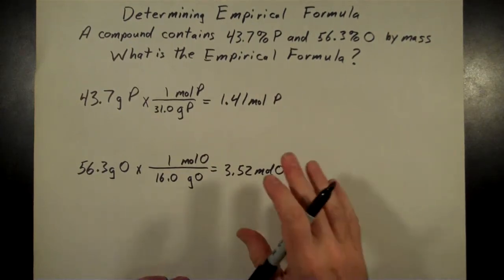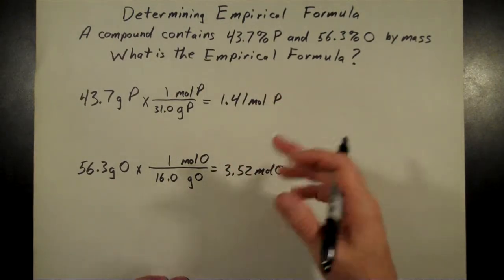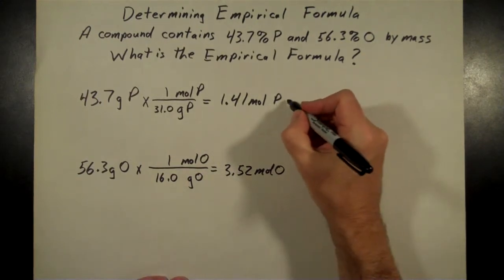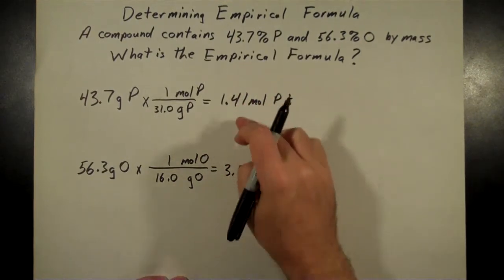At this step, we don't want to round yet. We got 1.41 moles of phosphorus, 3.52—you can't round either of those easily, they're not anywhere near close to whole numbers. To get these close to whole numbers, our next step is we're going to divide each of these by the smaller of these two, that's the 1.41.